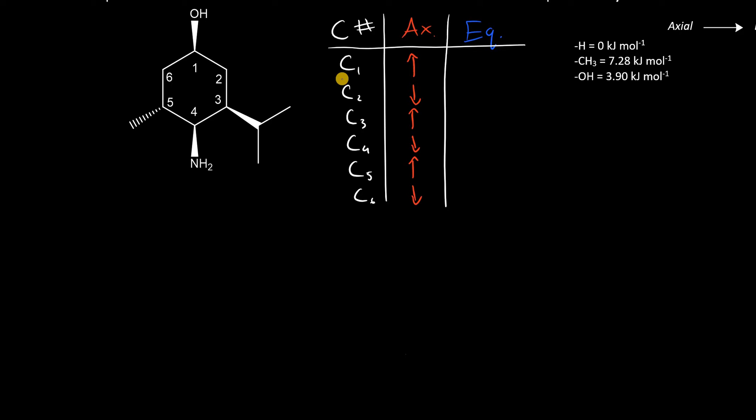It's the same thing with equatorial as well. If we have axial up at carbon 1, that means we have equatorial down. And if we have axial down at carbon 2, we have equatorial up here. Let's just say this OH is axial up, just arbitrarily. That means at carbon 2 we have axial down, and that means at carbon 3 it must be axial up.